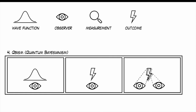So in QBism, essentially the wave function and the outcome of a measurement are personal to each observer. I was trying to sketch that here by showing two observers, each having their own version of the observation of the quantum system. So if you have two observers, you essentially have two individual experiences. Each wave function reflects an individual's subjective beliefs about the probabilities of the various possible outcomes and not an objective universal reality. The result each observer gets is a unique experience that applies only to them. This means that each observer constructs their own understanding of reality based on their interactions with the world.